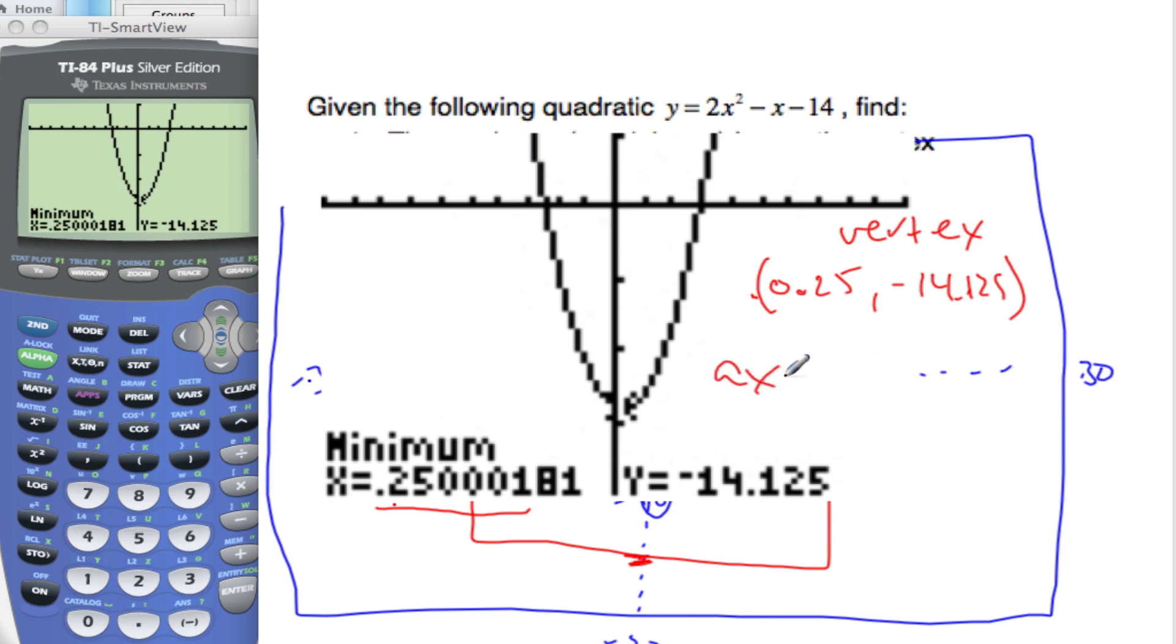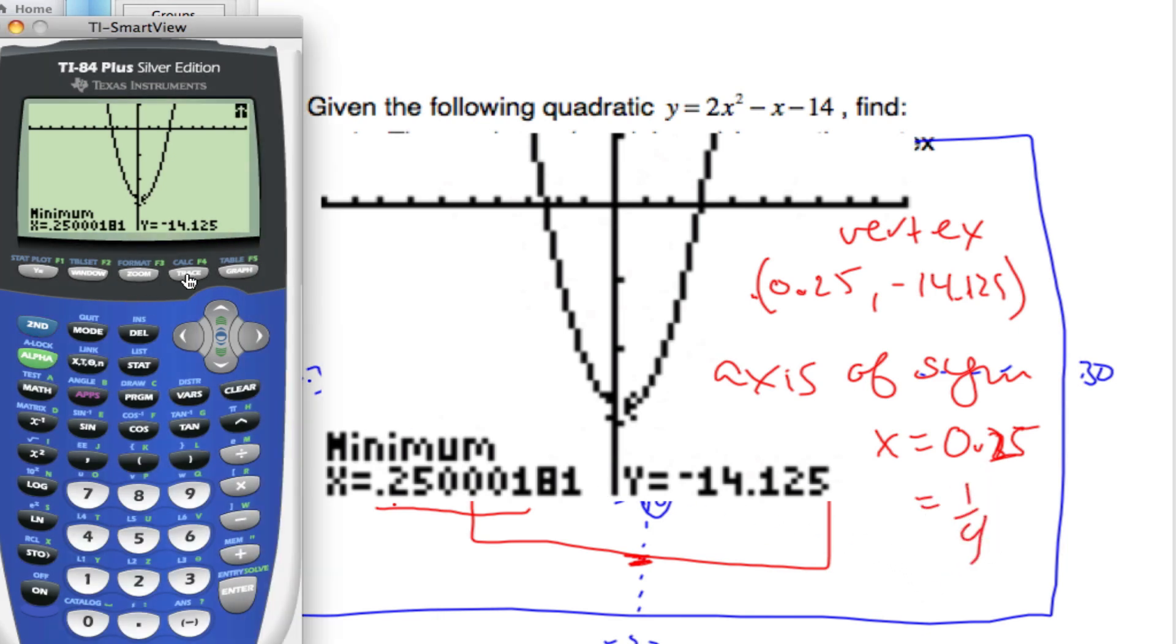Hence, the axis of symmetry. What's that going to be, Mr. Cole? Okay. So we just need to look at our x value. So it's going to be x equals 0.25, or x equals a quarter. Right. And so the whole key is to get your window set properly, and then either minimum or maximum, and set your left and right bound.